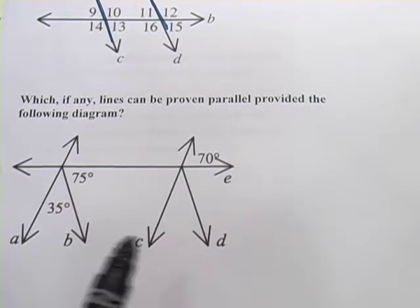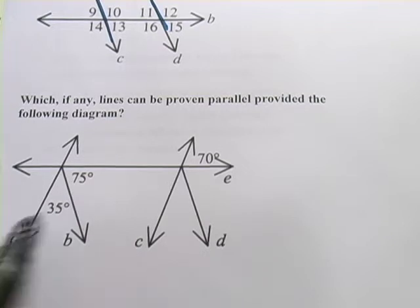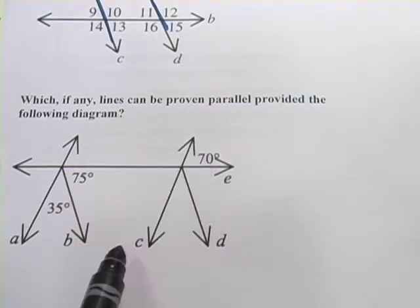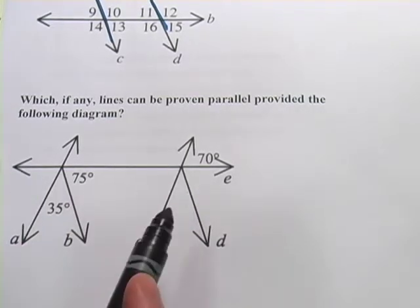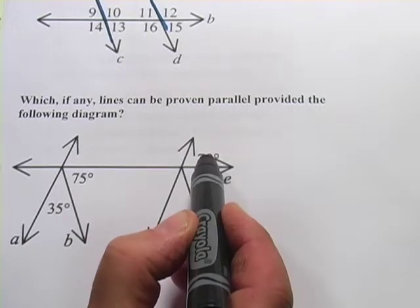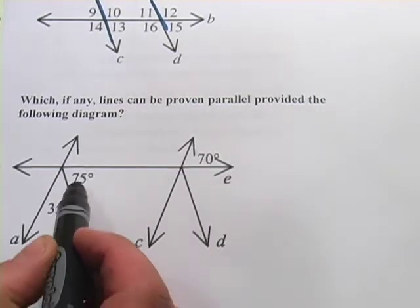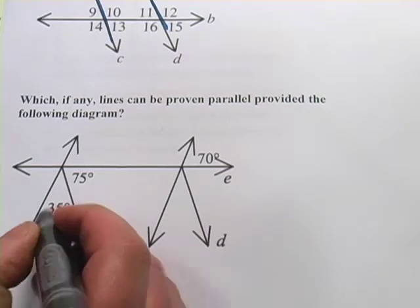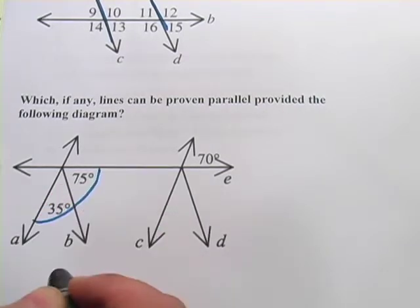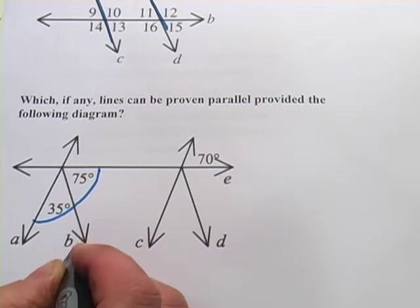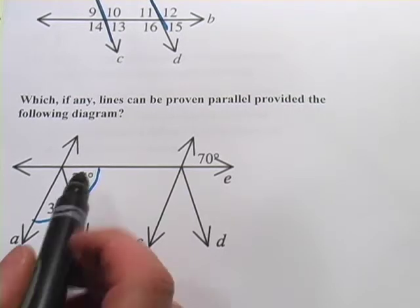So I guess what strikes me first is these two lines might be parallel, and this could be the transversal. But how do we prove that? Well, we've got 70 up here, and then we've got 35 and 75 down here. If I put these two together, then I can kind of ignore this little guy, this little ray sticking out here.